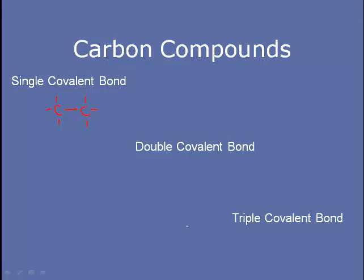We're not going to actually bother putting in all the hydrogens — it's sort of an organic chemistry shorthand. We can have double covalent bonds between carbons. In this case, you'll see that each of these carbons has already used up two of its bonding spaces, so it only has room for two more hydrogen atoms. You can also have triple covalent bonds between the carbon, and that would mean that there's only one more spot for hydrogen to bond on each carbon.